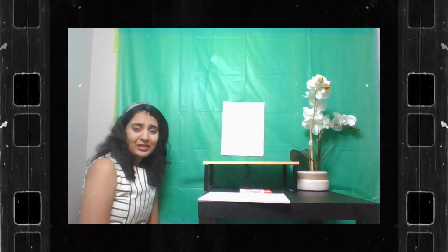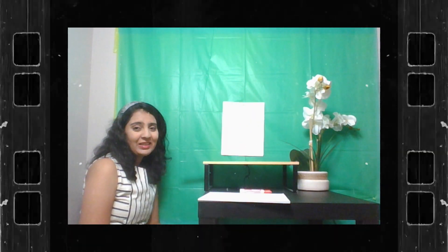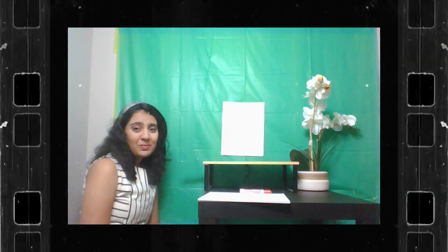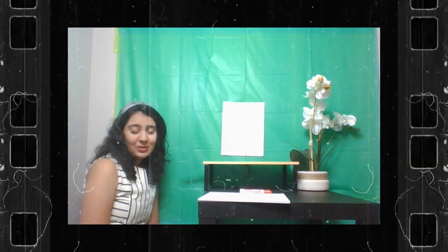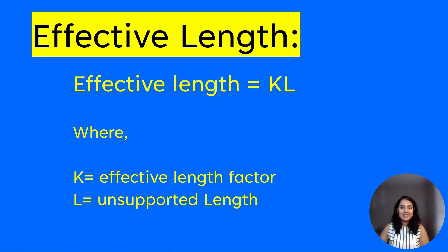What is effective length? It is the length of the column, unsupported length of the column, multiplied by effective length factor. So effective length is this factor K multiplied by unsupported length, and the factor K is effective length factor. So what is an unsupported length of the column?